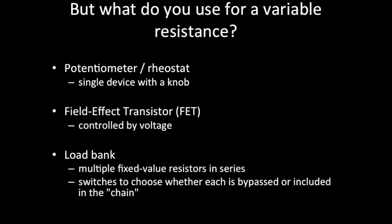What do you use for variable resistance? Typically we think of a potentiometer, sometimes called a rheostat, which is a single device with a knob to turn up or down the resistance. There are also field-effect transistors, FETs — they have two pins that current flows between, and a third pin you can control with voltage, which controls how much resistance the FET provides between the other two terminals. A third possibility is a load bank — multiple fixed-value resistors in series, with switches to choose whether each resistor is bypassed or included, so you can increment the total resistance one step at a time.